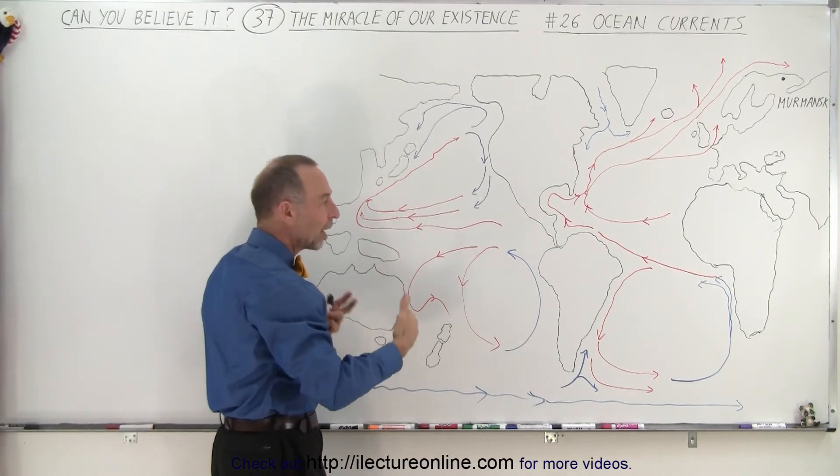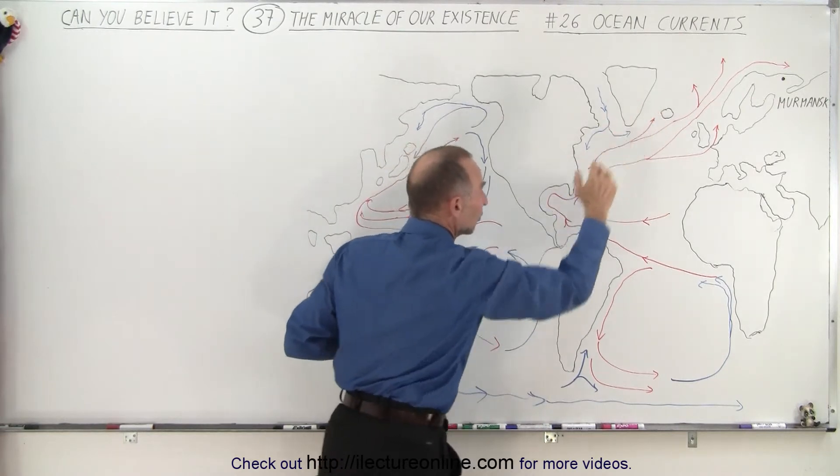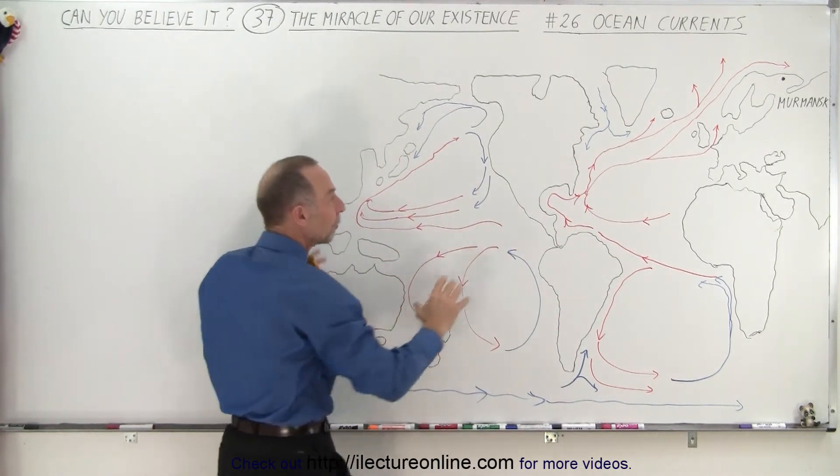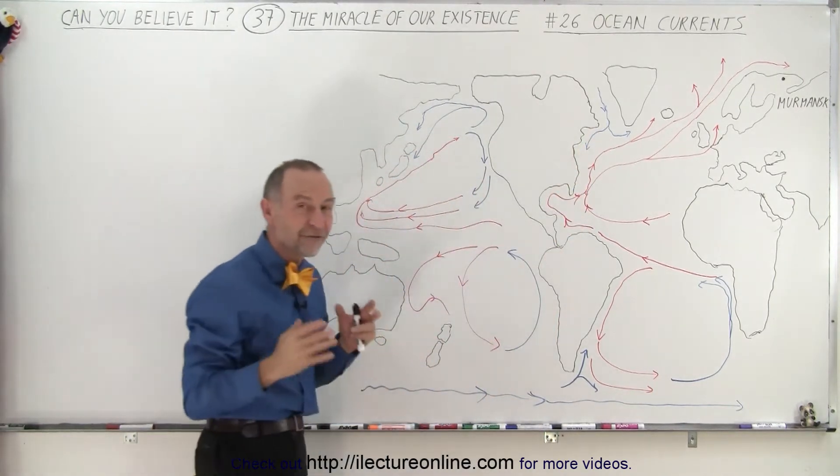Likewise, we have these hot ocean currents. They typically start around the equator and then move into a northerly direction in the northern hemisphere or a southerly direction in the southern hemisphere, bringing all that very warm water to regions where otherwise it would be frigidly cold.